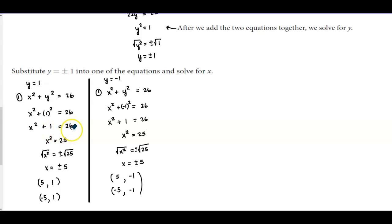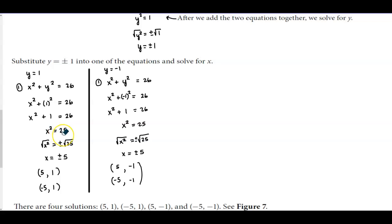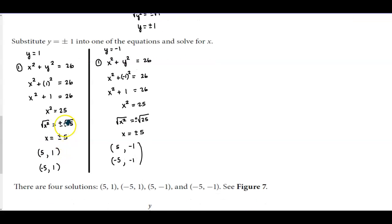Subtracting 1 from both sides gives 26 − 1 = 25, so x² = 25. Taking the square root of both sides — and remembering the plus-or-minus — gives x = ±5.